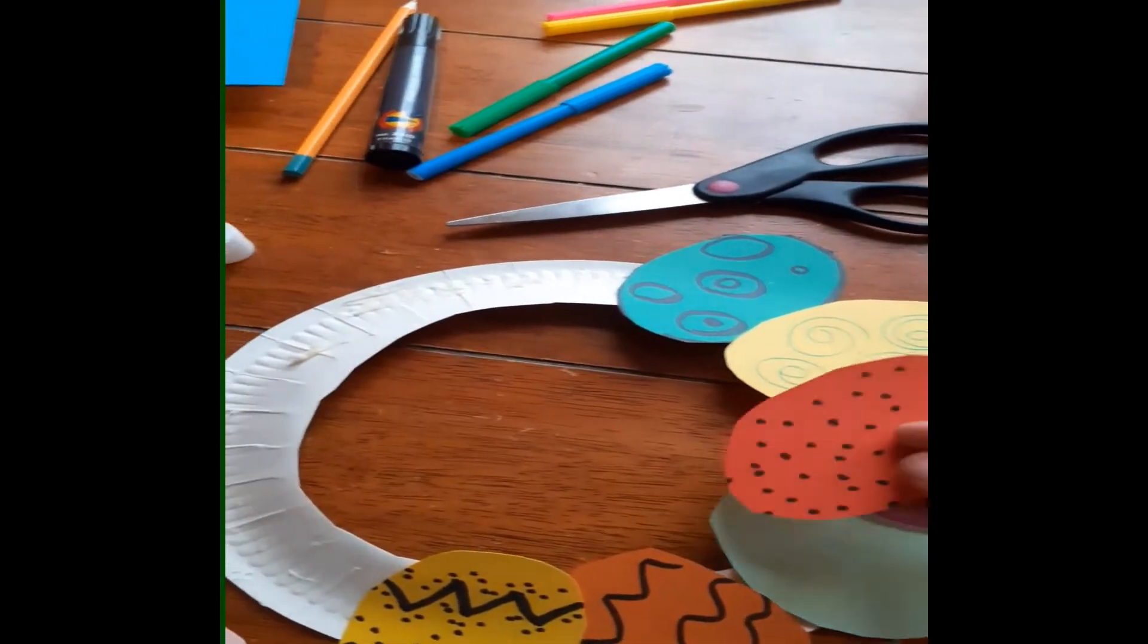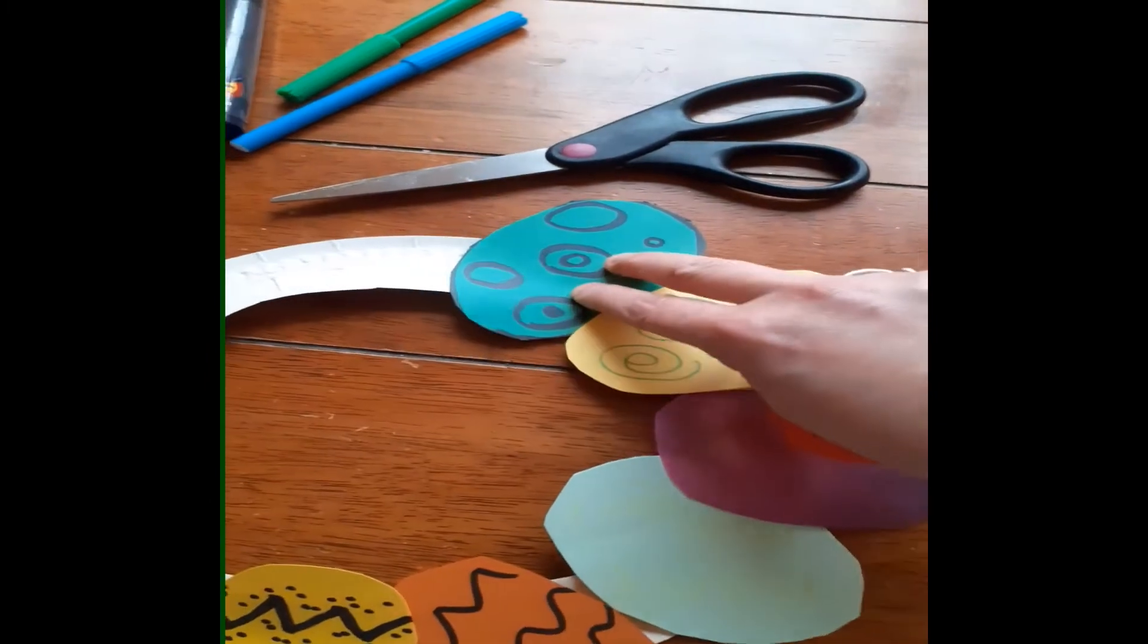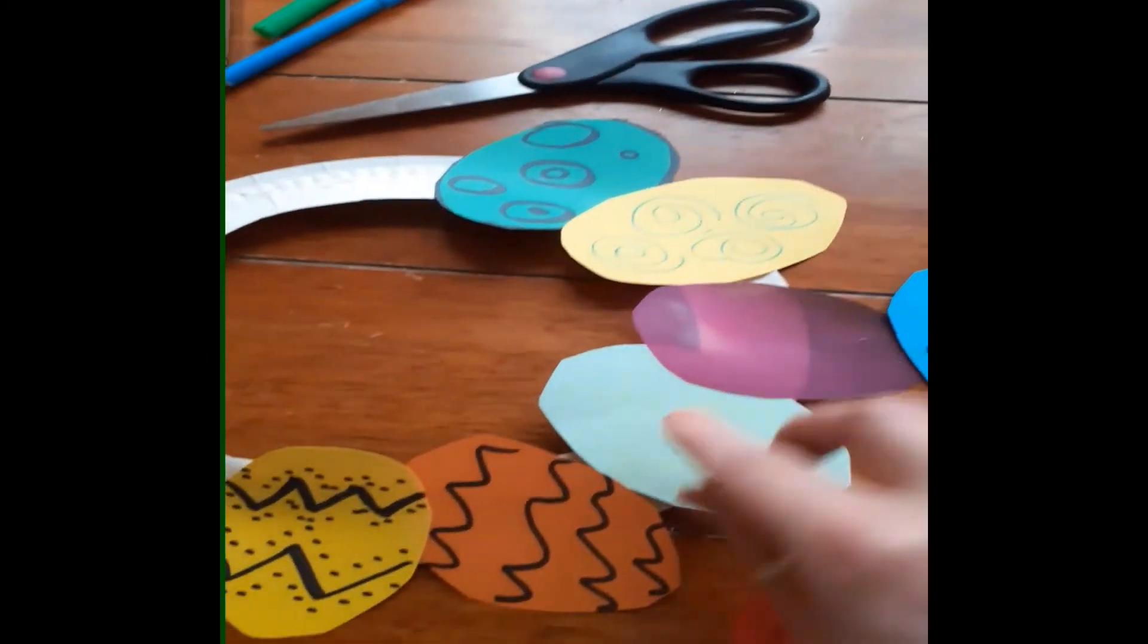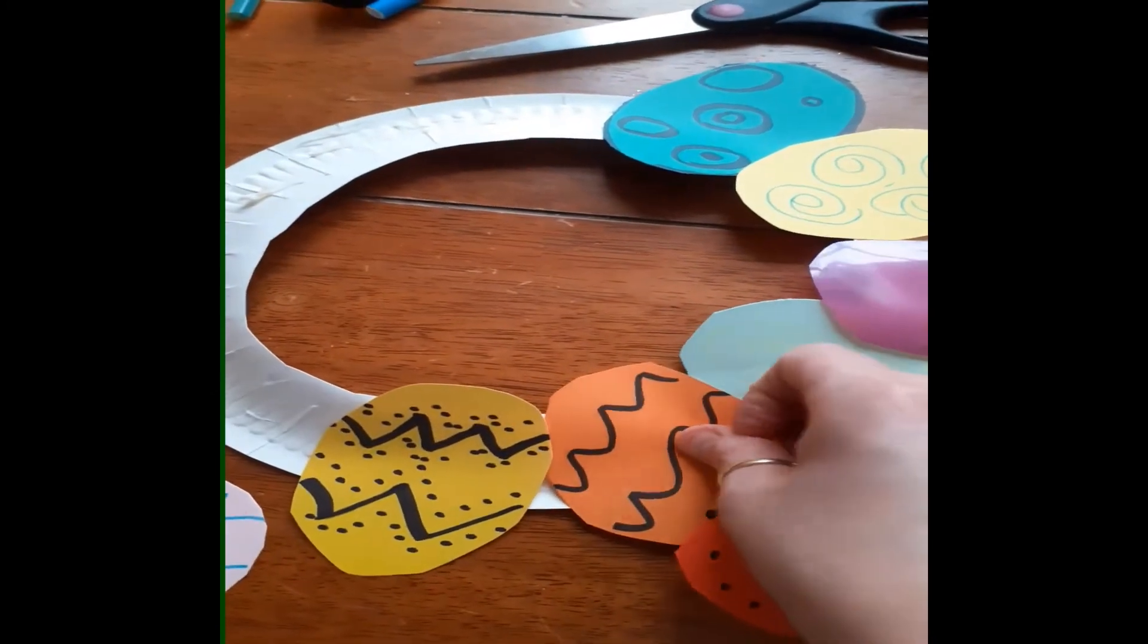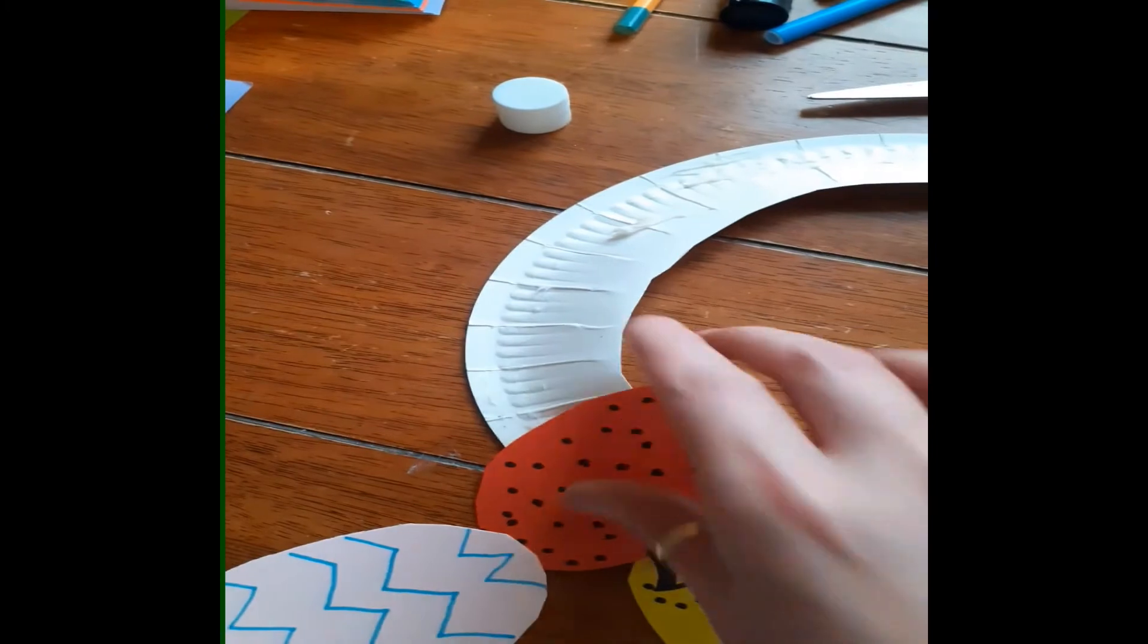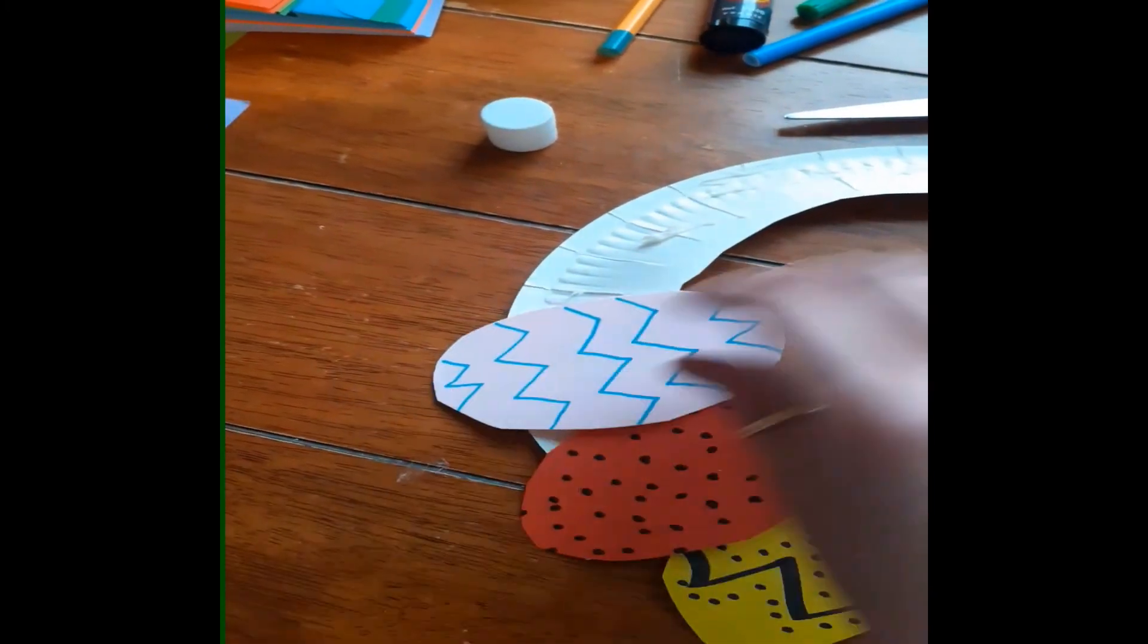After you've added your pattern you get the paper plate and slowly start gluing down your eggs. There isn't a right or wrong way you can do this. You can do it however you like.